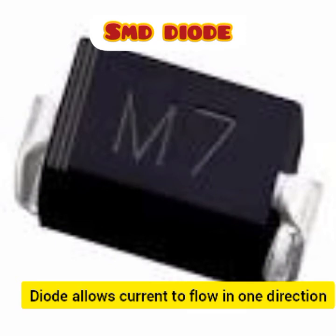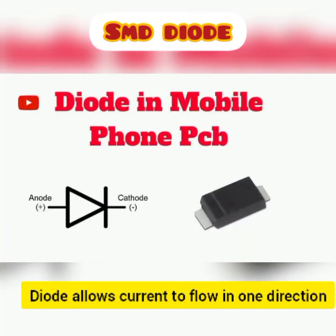The next component is the diode — specifically an SMD diode. The diode is located on the motherboard or down board. It can serve as a switching component and allows current to flow in only one direction.